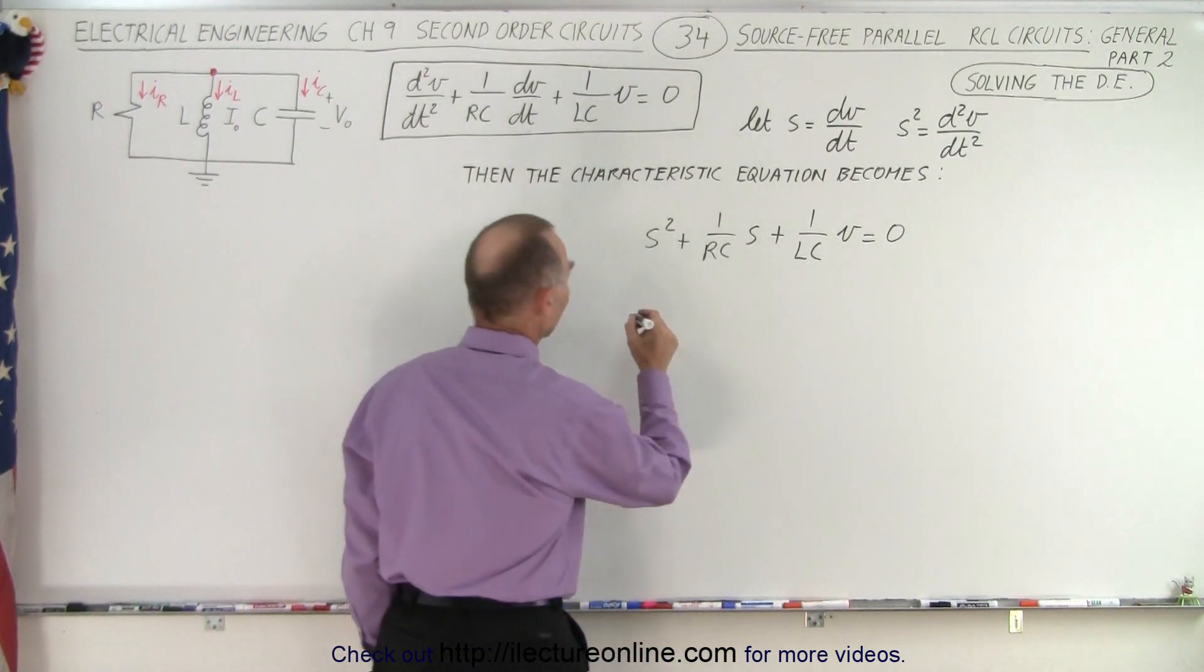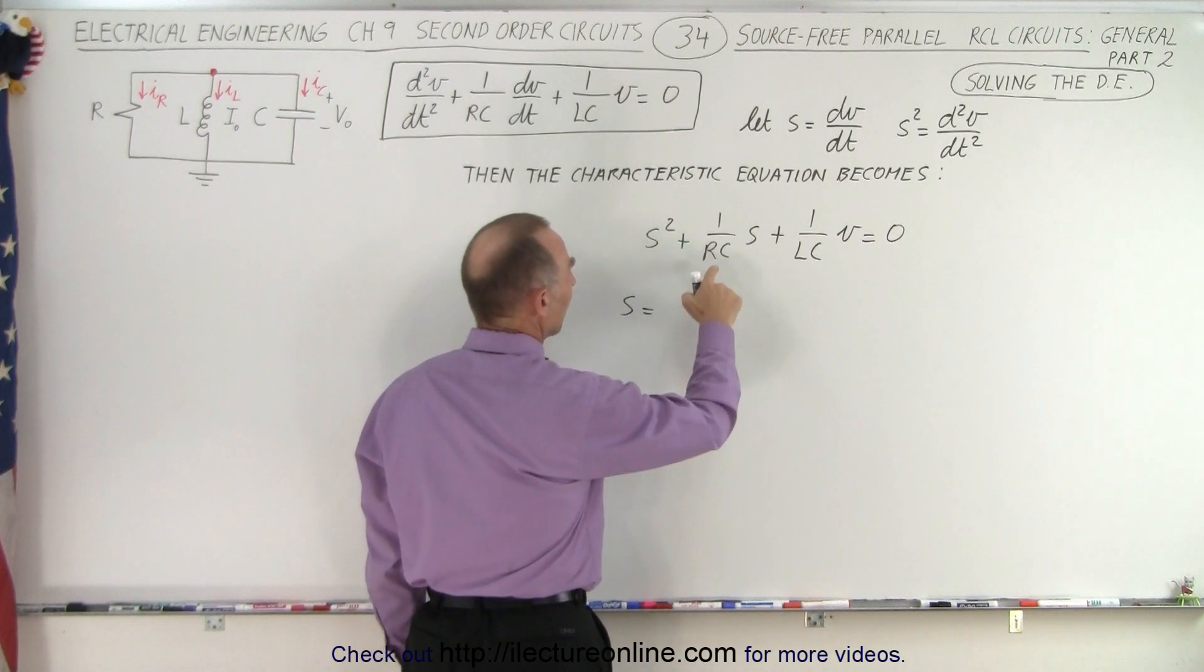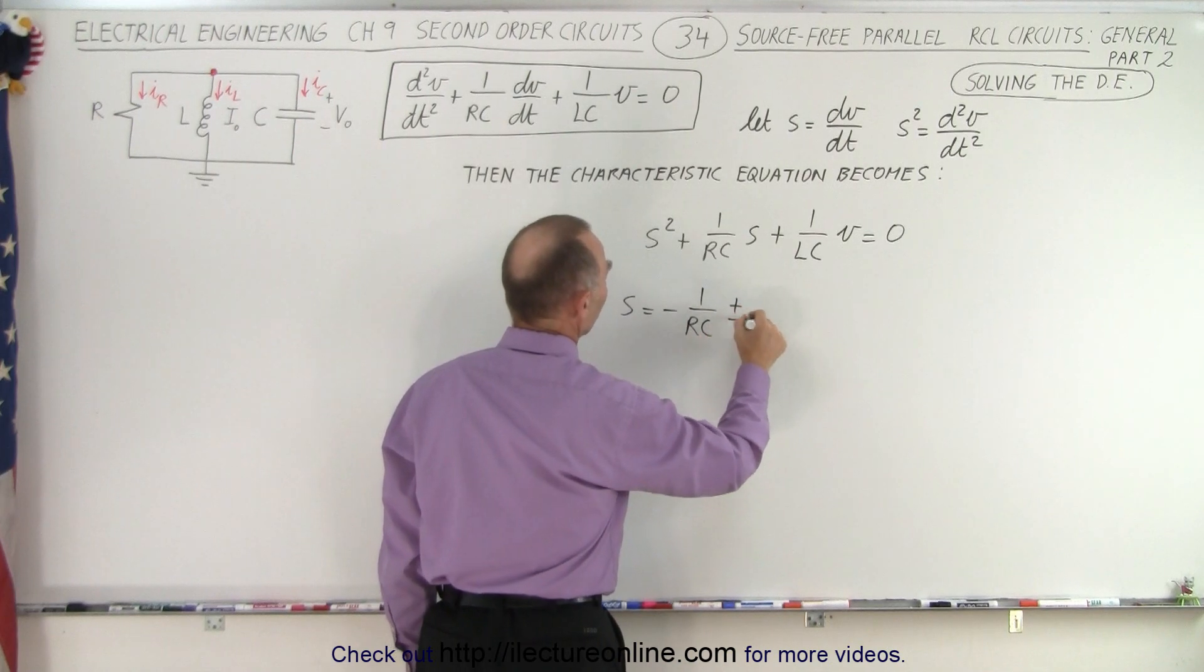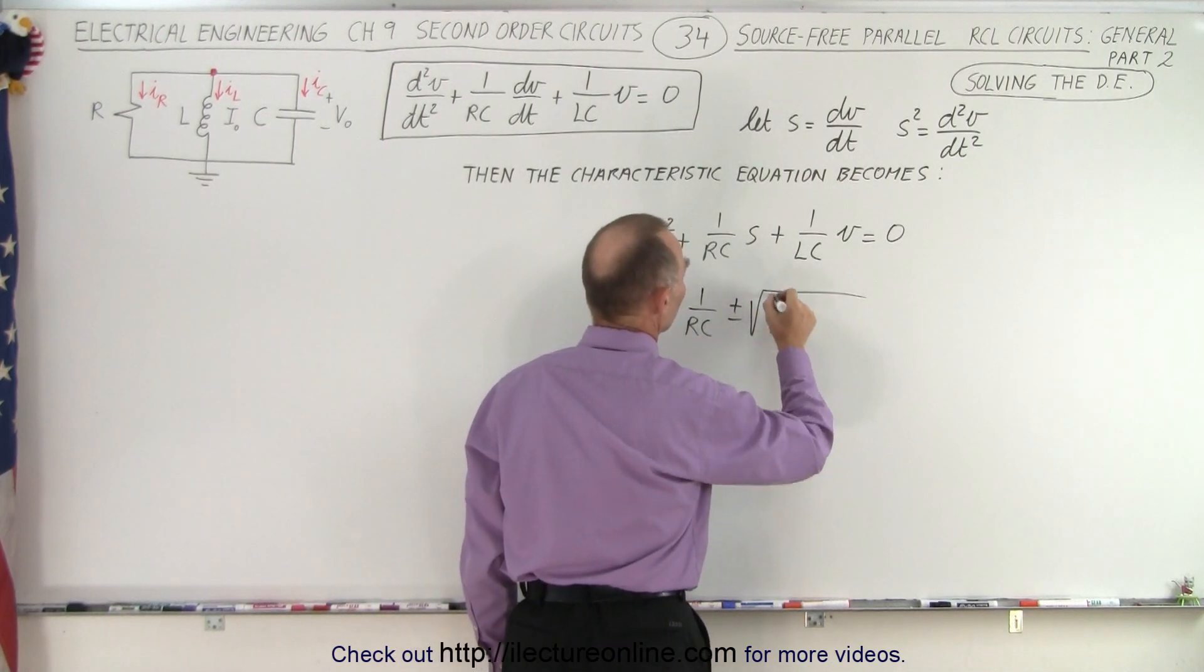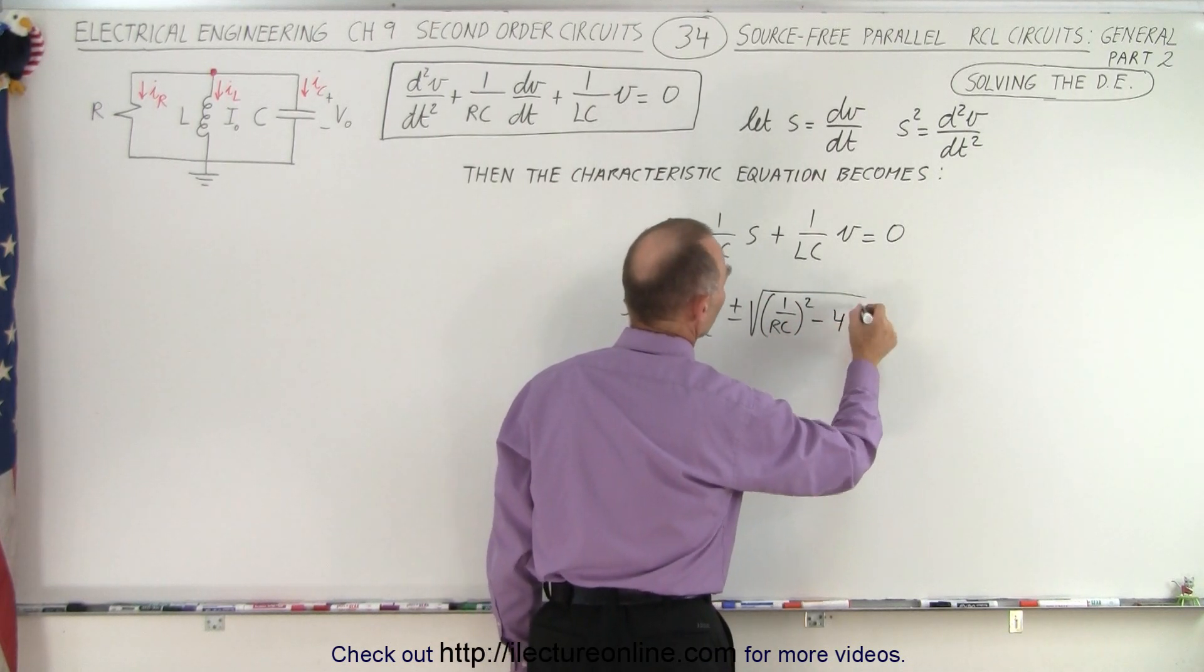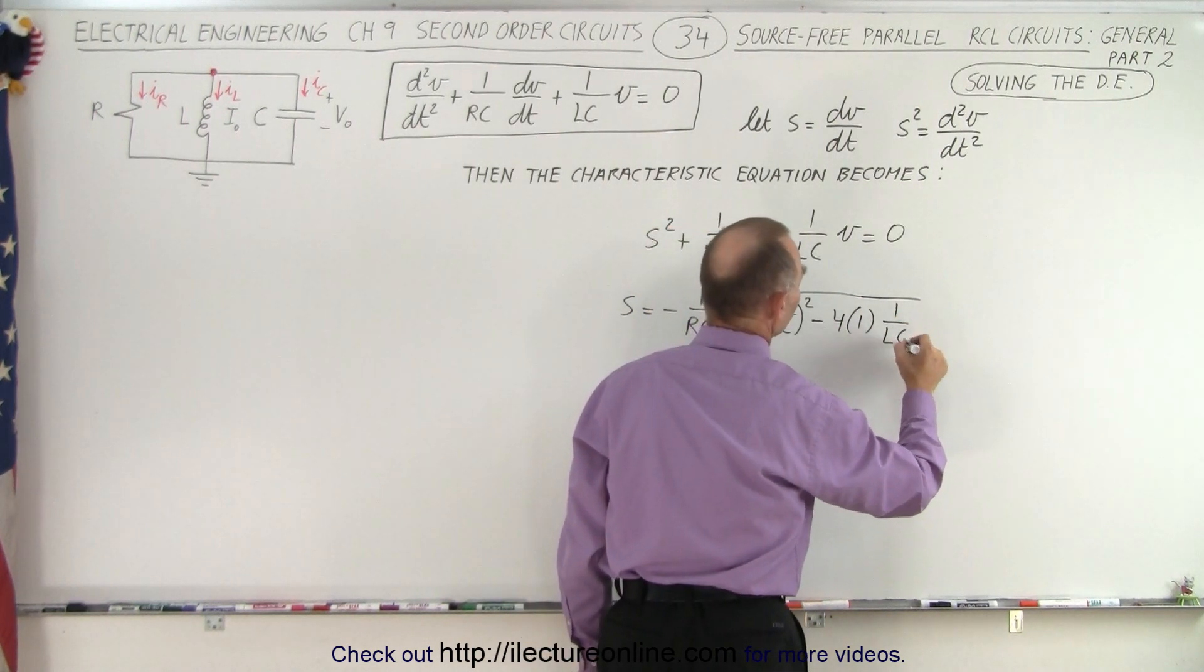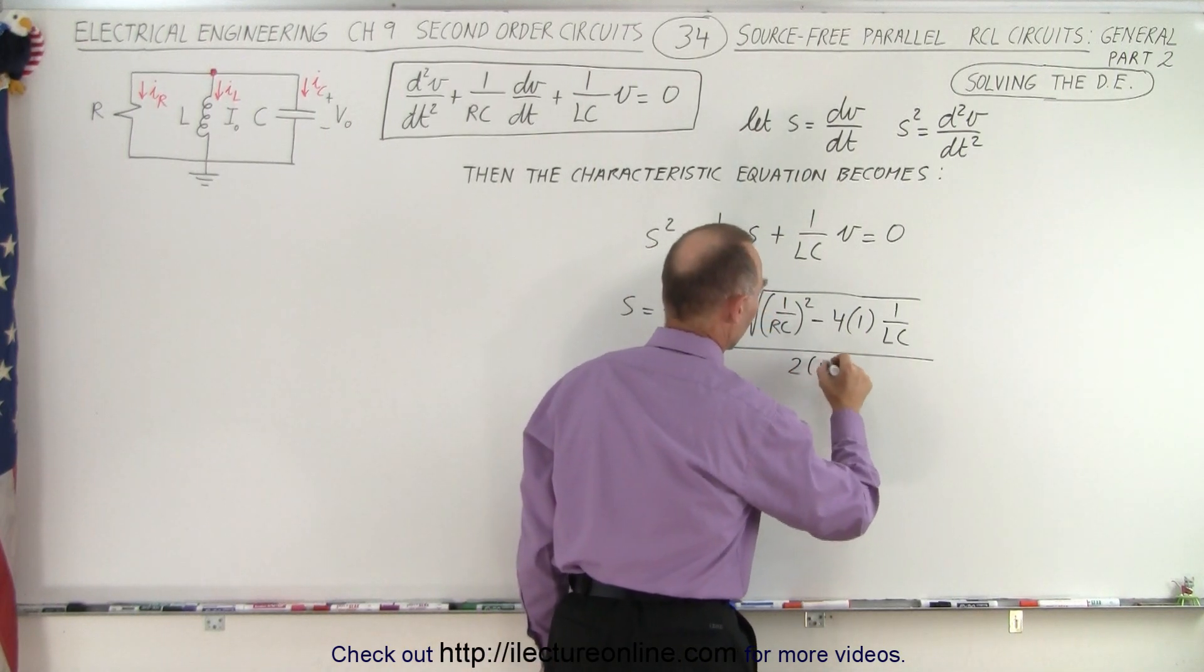So what we can say then is that S equals minus 1 over RC, plus and minus the square root of 1 over RC squared, minus 4 times A which is 1, times C which is 1 over LC, and we take the whole thing and divide it by 2A, which is 2 times 1.